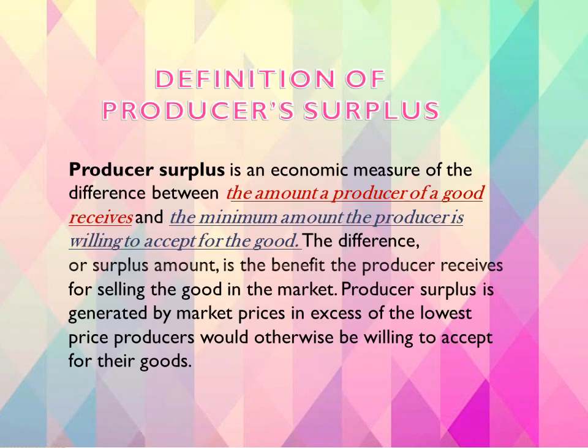Producer surplus is an economic measure of the difference between the amount a producer of a good received and the minimum amount the producer is willing to accept for the good. The difference, or surplus amount, is the benefit the producer receives for selling the good in the market. Producer surplus is generated by market prices in excess of the lowest price producers would otherwise be willing to accept for their goods.